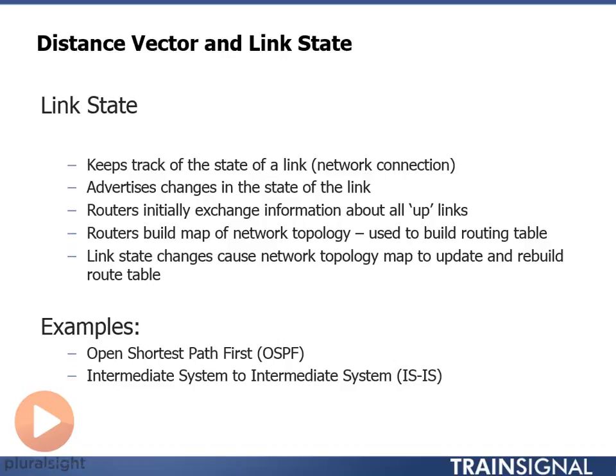The router and the routing protocol then use this map of the network topology with all of the possible paths. It uses an algorithm to build the routing table. So it takes the information learned through all these link state information packets, uses that to build the topology map, and then uses the topology map to build the routing table.